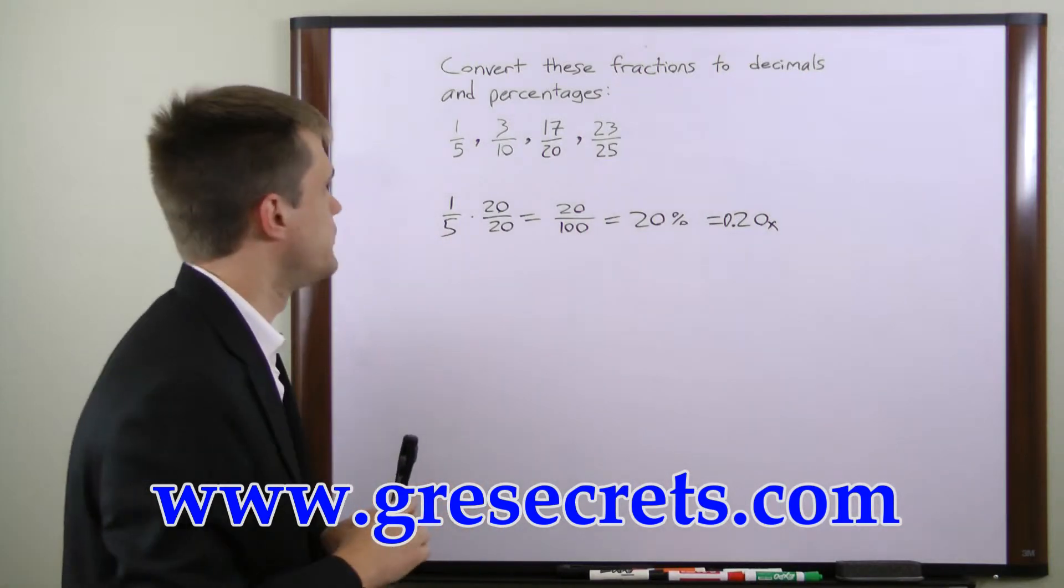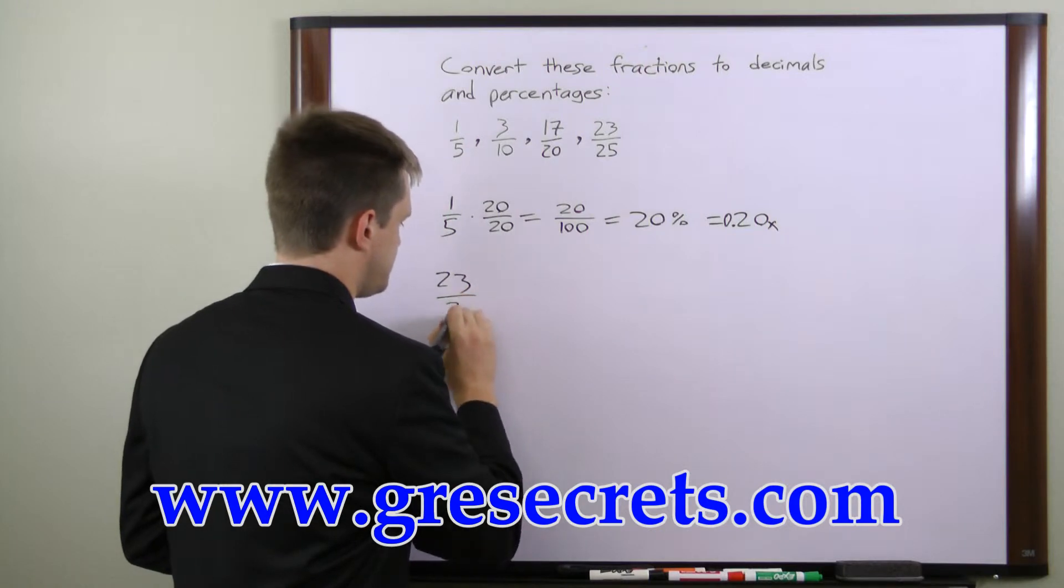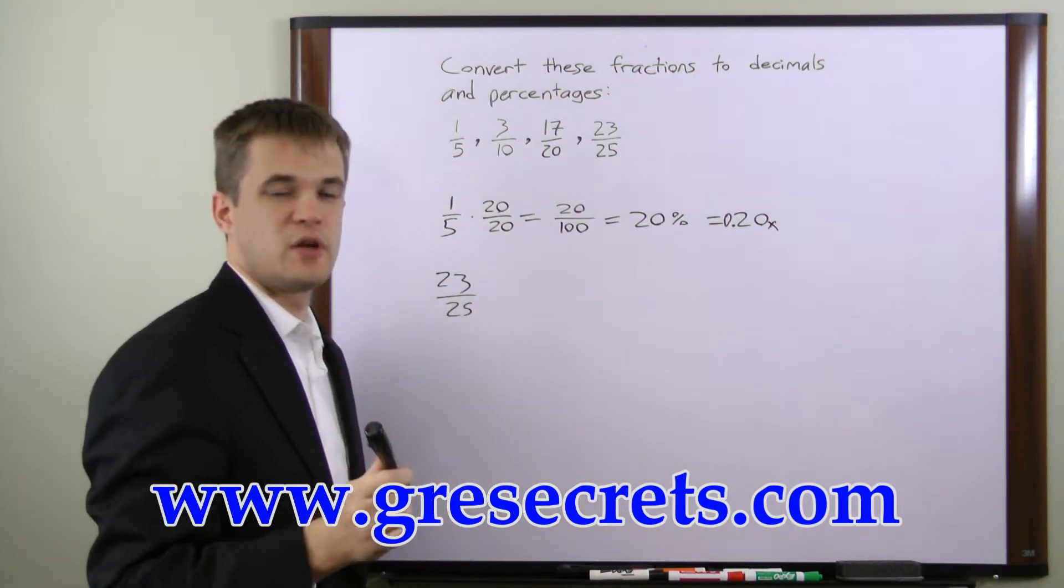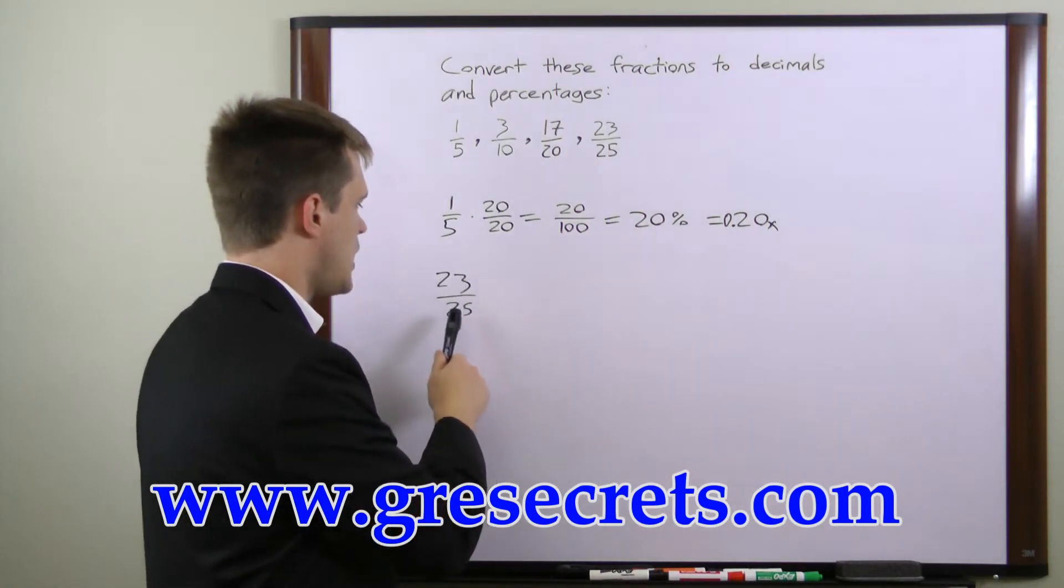Let's take one more example. 23 over 25. Now to get your denominator to 100 in this case, we need to multiply on top and bottom by 4.